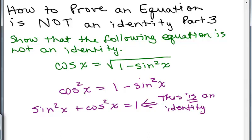You may think, if that is an identity, why isn't the original one an identity? The reason is when you square something, it changes the equation — it's not exactly the same equation. Remember, when you square both sides of an equation you always have to check your solutions.